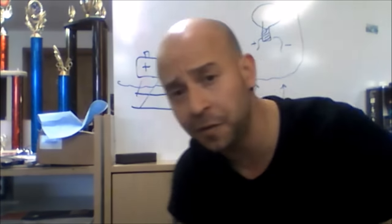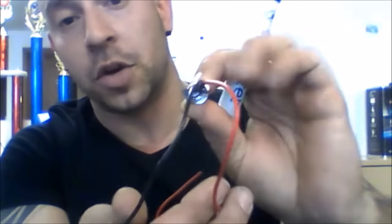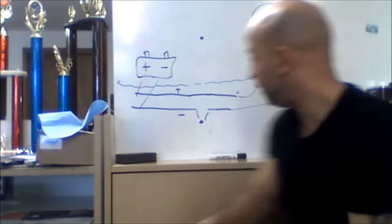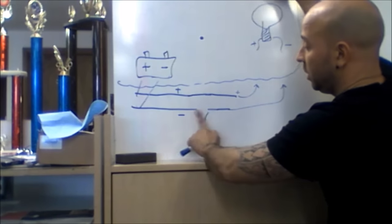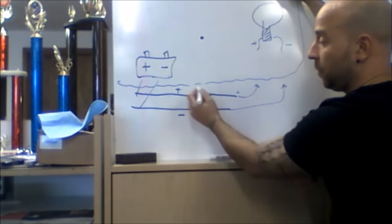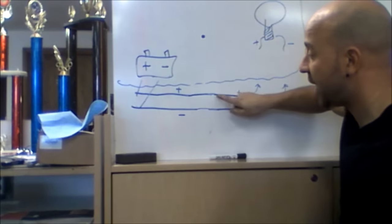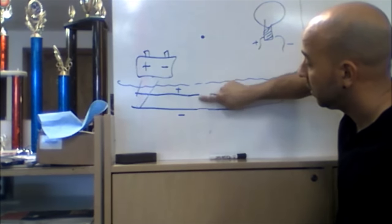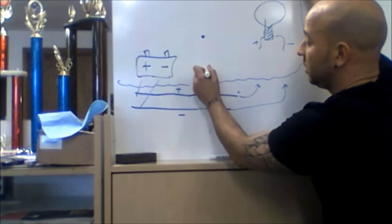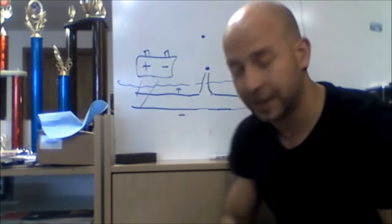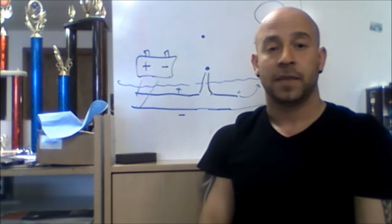So don't get confused if your toggle switch has a red and a white pigtail on it or no pigtails at all and it's just two connections. All you're going to do is take one of your two lines, either positive or negative, and wire that to your toggle switch so that it opens and closes that circuit. And that's it.